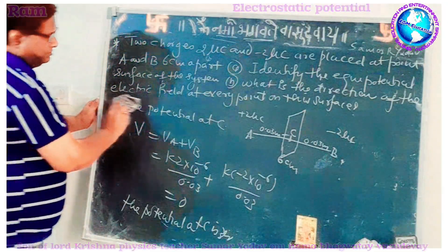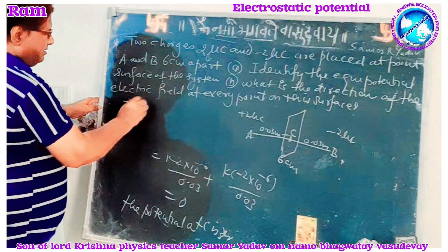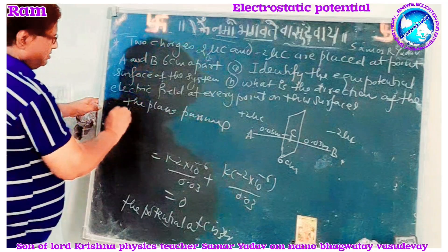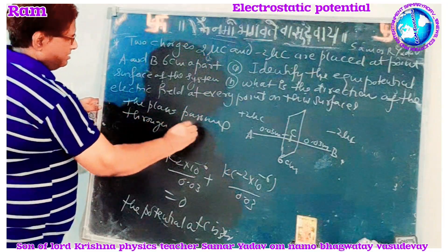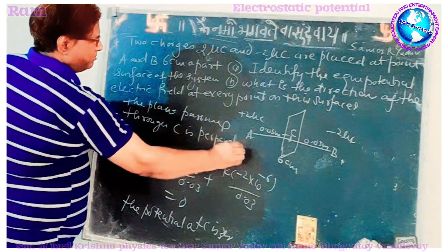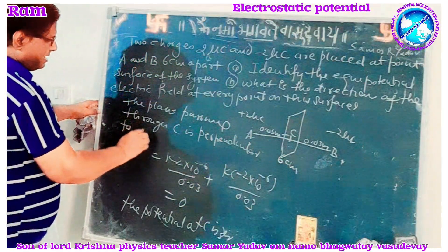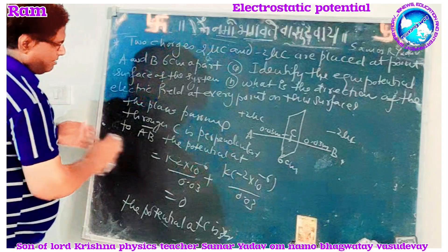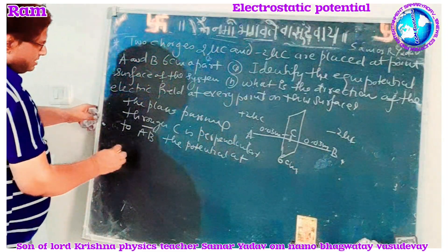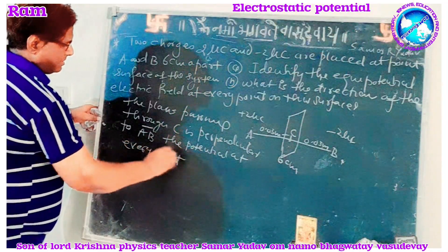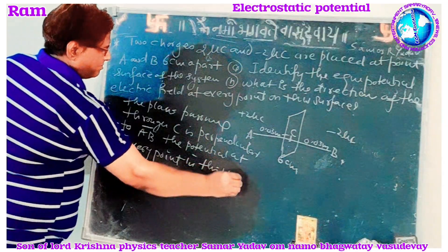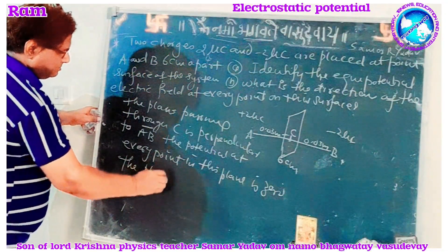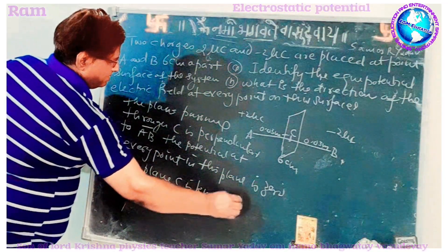The plane passing through C is perpendicular to the line segment AB. Therefore, the potential at every point on this plane is zero, and this plane through C is known as the equipotential surface.